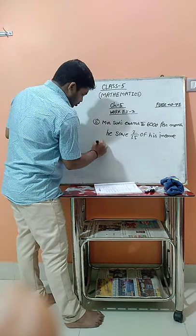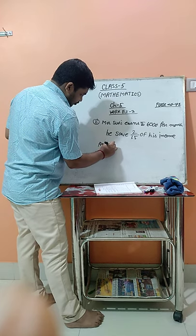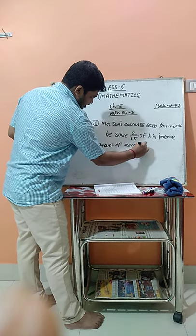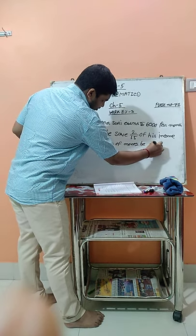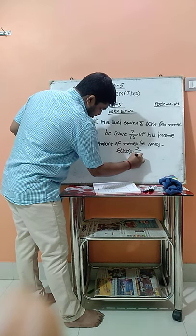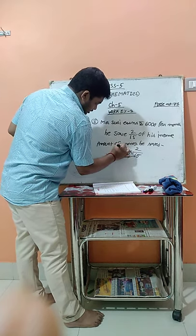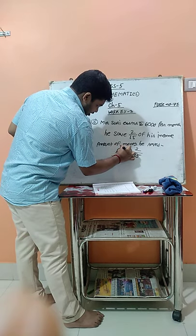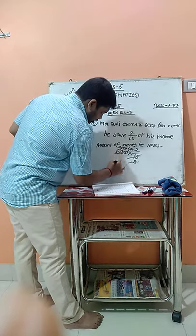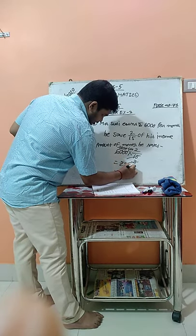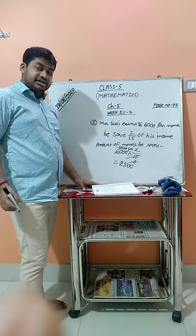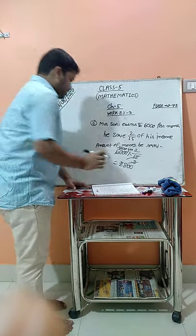So the amount of money he will save: 6000 multiplied by 2/15. We simplify: 6000 divided by 15 is 400, multiplied by 2 gives 800. So the amount of money that he saved is 800 rupees.